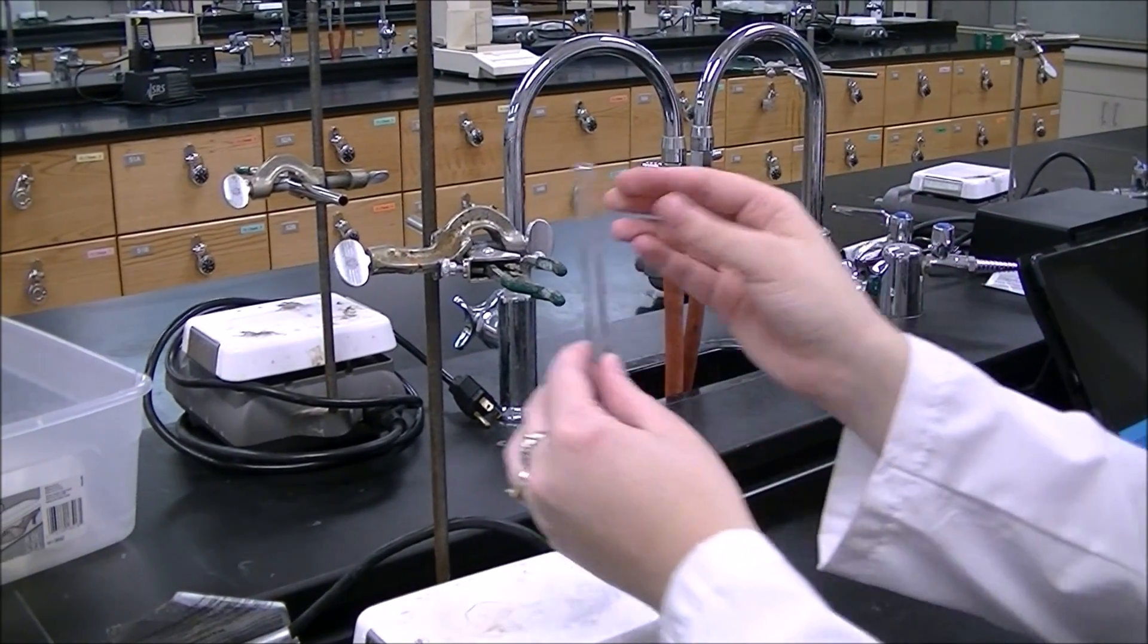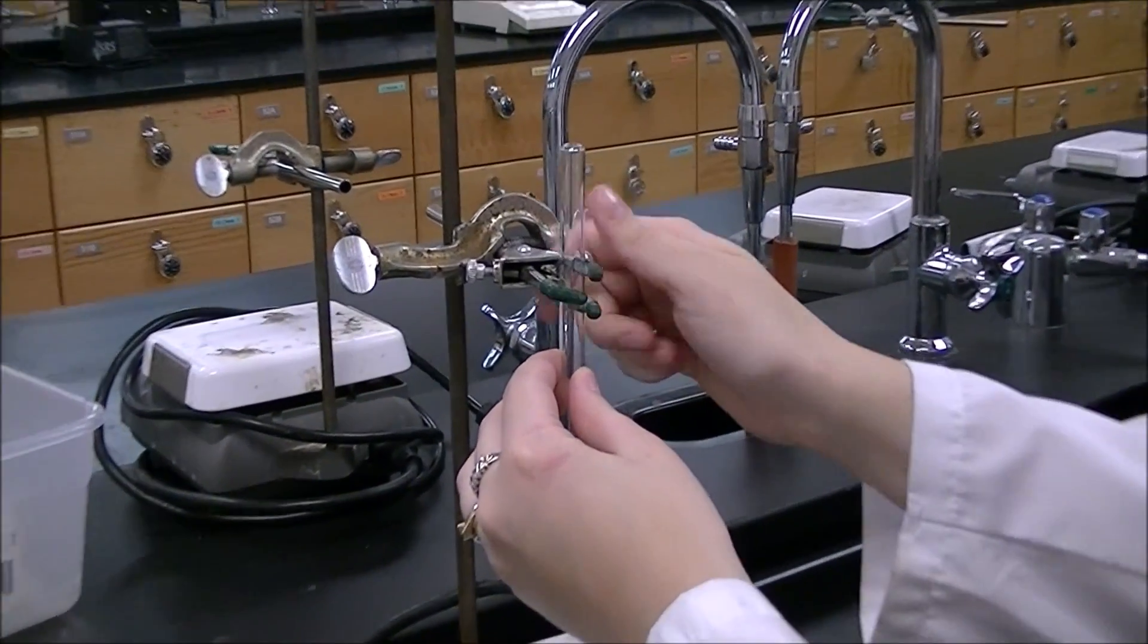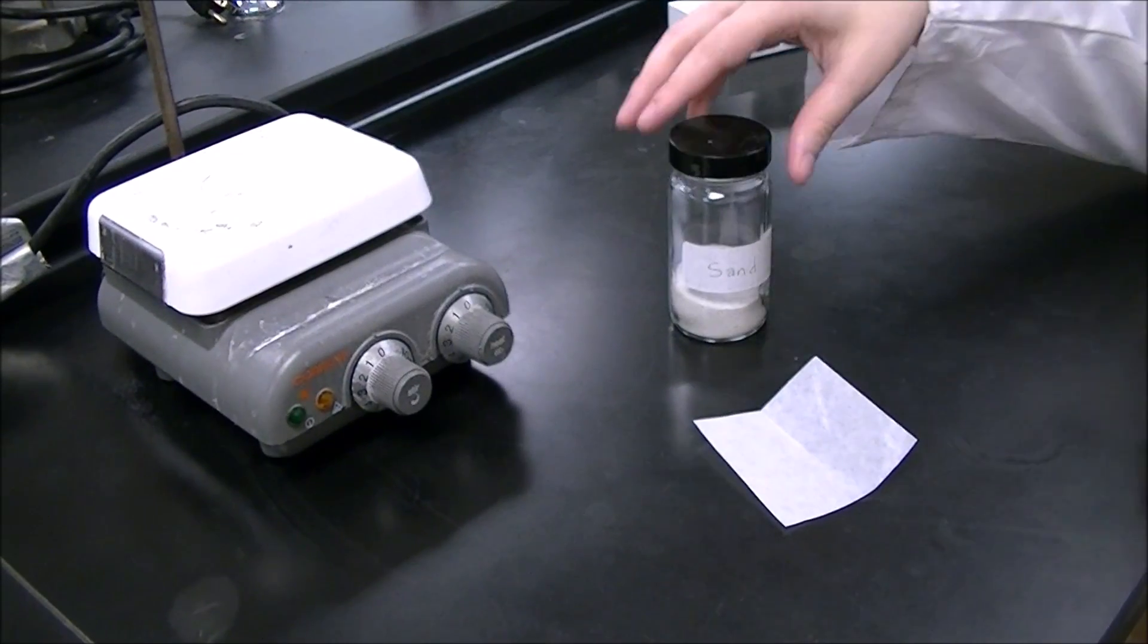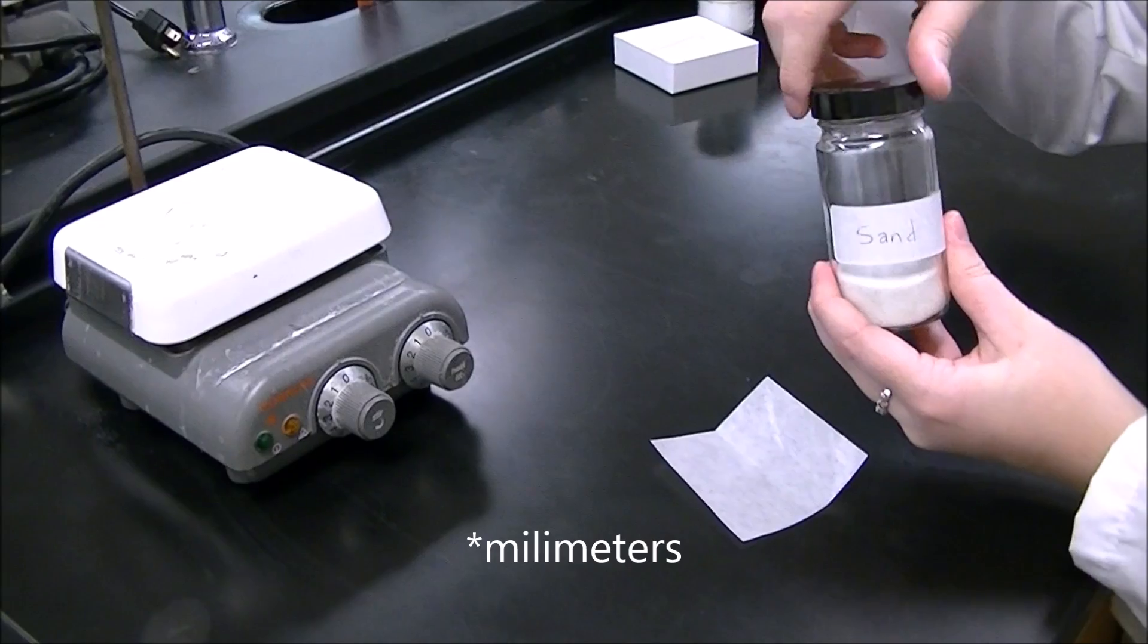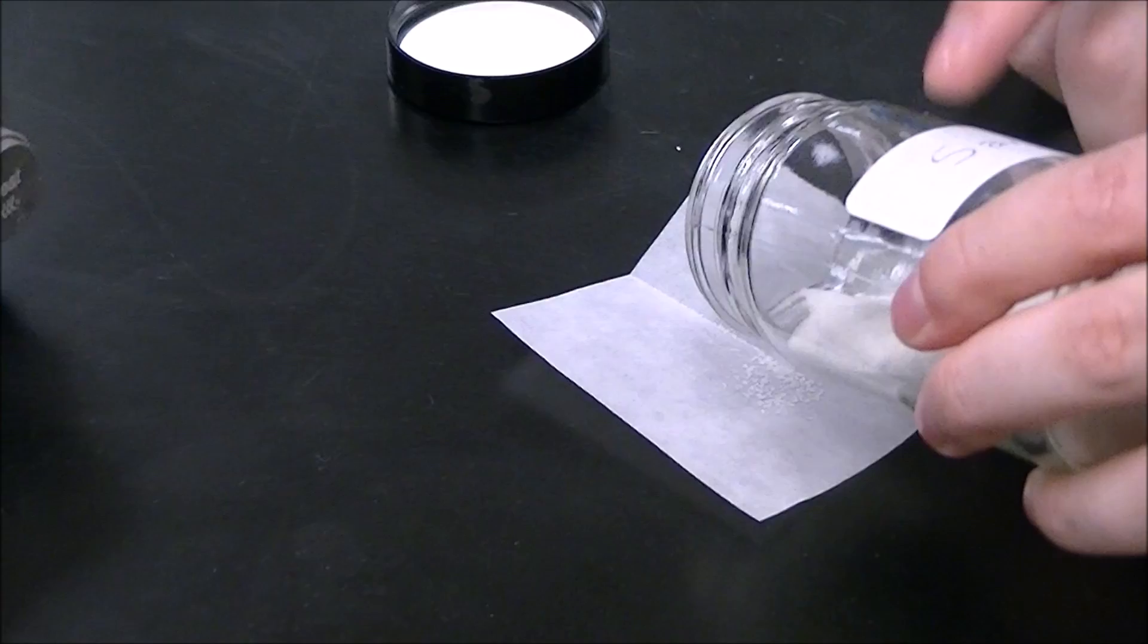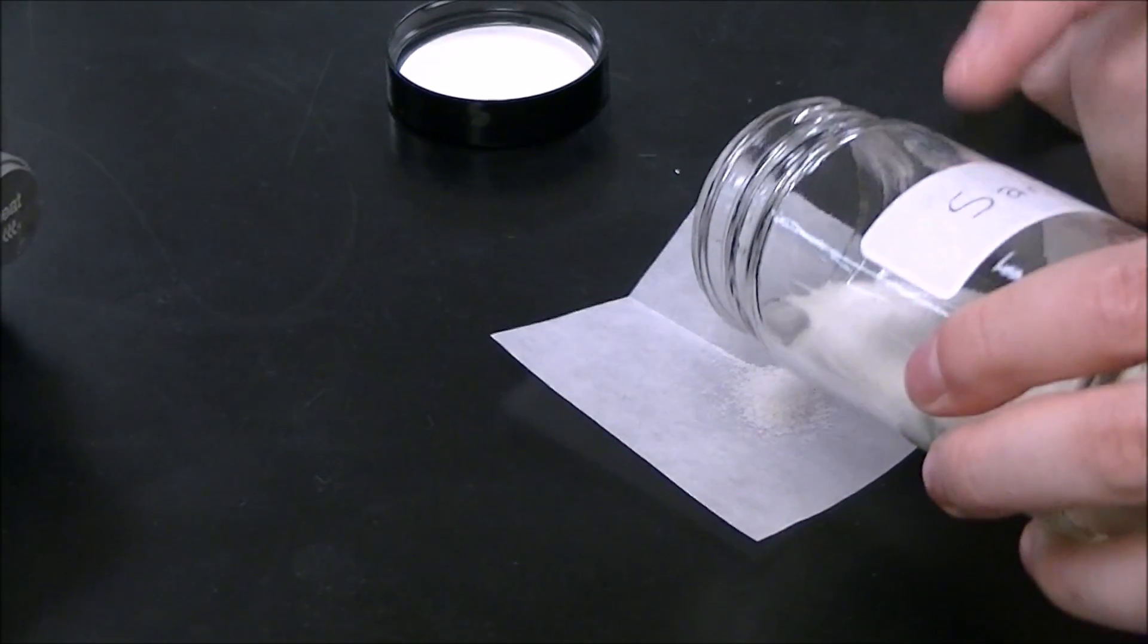Now attach the column to the stand. Now we're going to add about 2 milliliters of sand to the bottom of our column. You can get it in there by using this wax paper as kind of a funnel.